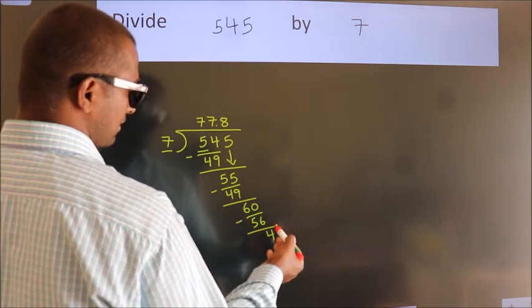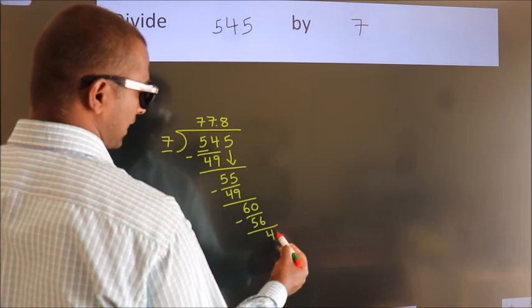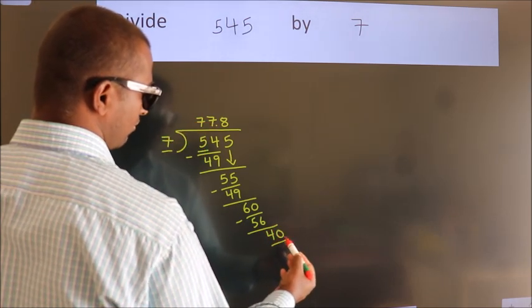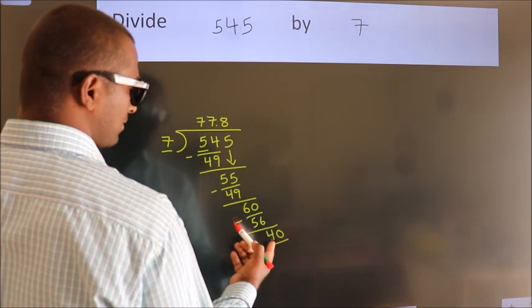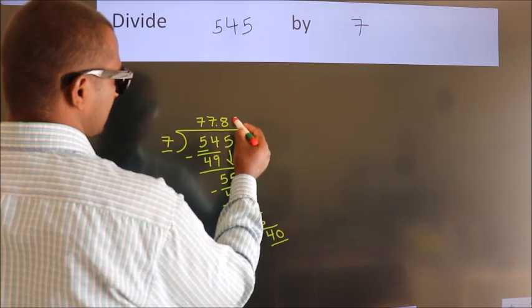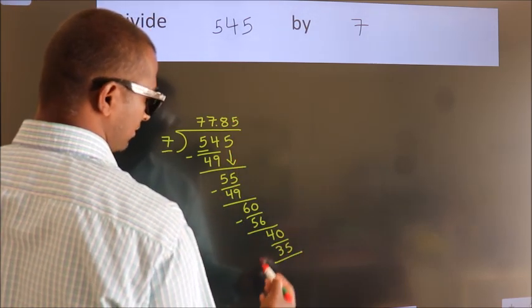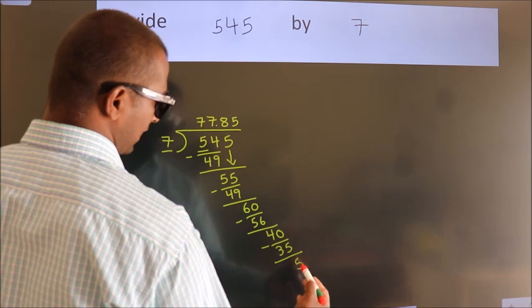After this, we already have the decimal, so directly take 0, giving us 40. A number close to 40 in the 7 table is 7 times 5 equals 35. Now we subtract and get 5.